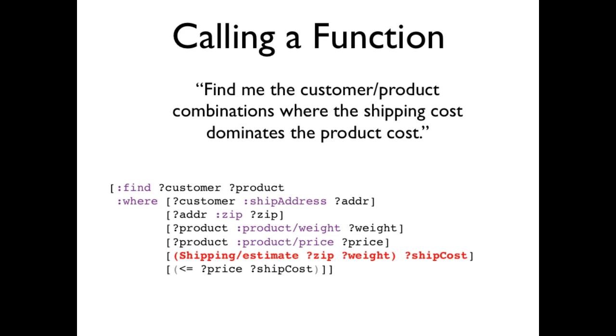Here's a more substantial query. Imagine that we've become concerned about the cost of shipping relative to the price of our products. We would like to know under what circumstances will a product have a shipping cost higher than its price. This query implicitly joins customers, addresses, and products. And in the middle of the query, it calls out to shipping estimate to get a piece of information that's not in our source data. That's cool, but it raises a couple of questions.